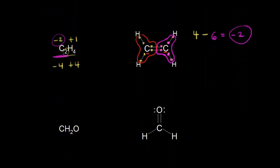Moving on to CH₂O, which is formaldehyde. Oxygen usually has an oxidation state of minus two — one oxygen gives us minus two. Hydrogen usually has an oxidation state of plus one, and we have two of them for plus two. This total has to sum to zero, so carbon should have an oxidation state of zero in this molecule.